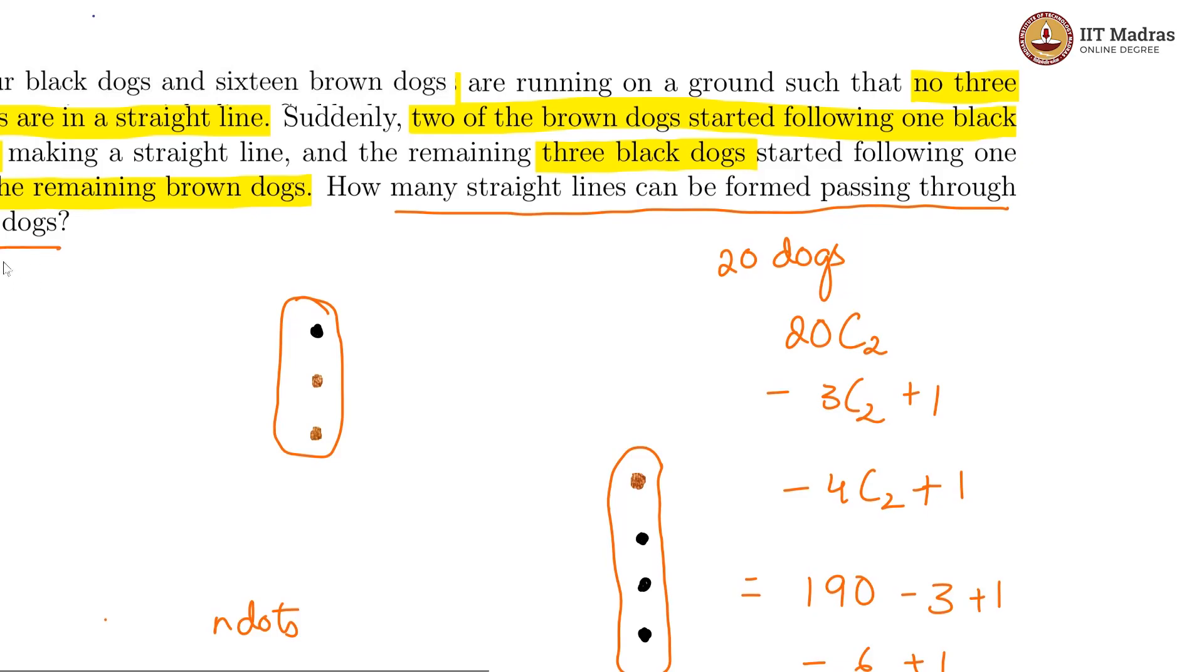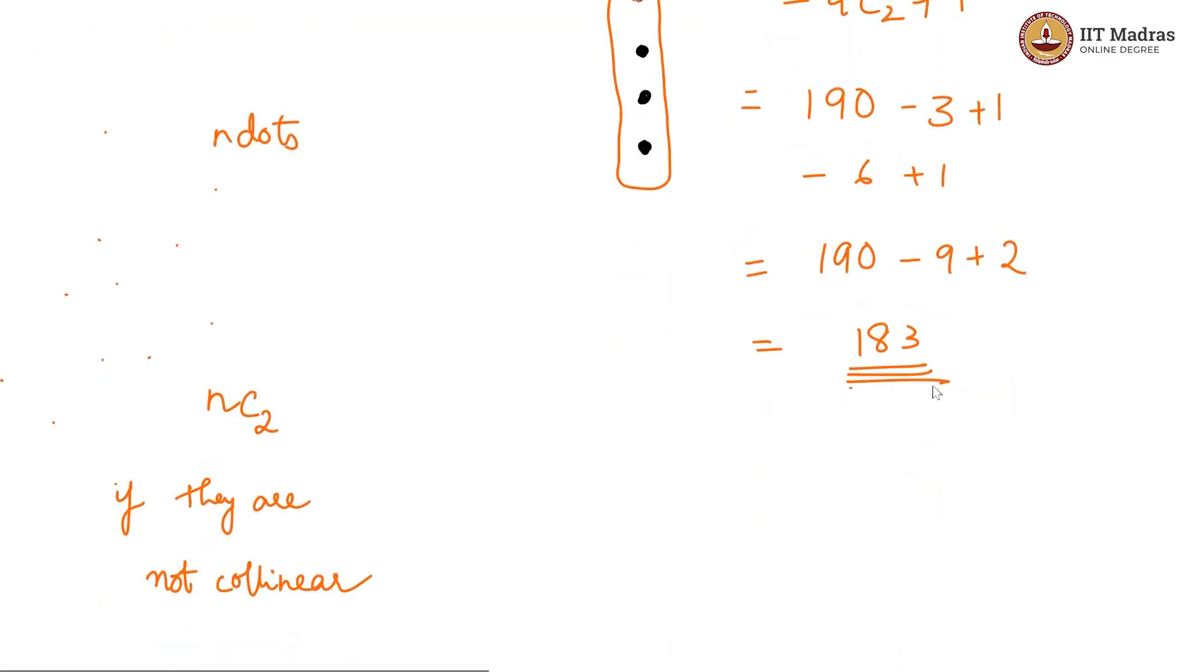If you are only considering 1 dog per line, then you can get infinite. So what it actually is, is supposed to be how many straight lines can be found passing through at least 2 of the dogs, that is the actual question and that number is 183.